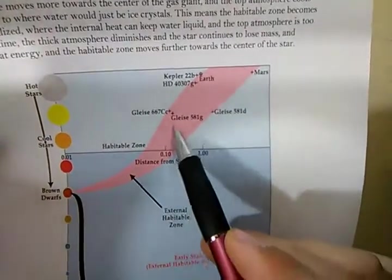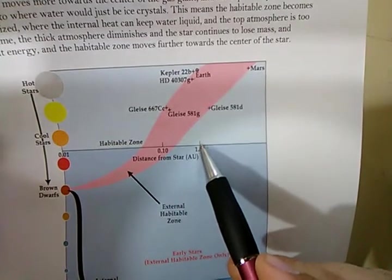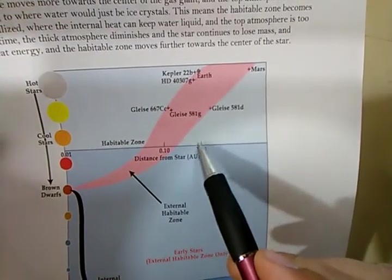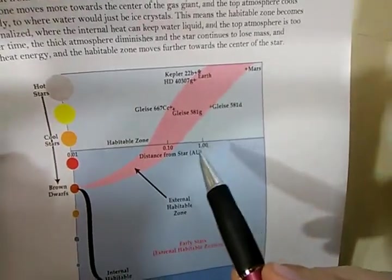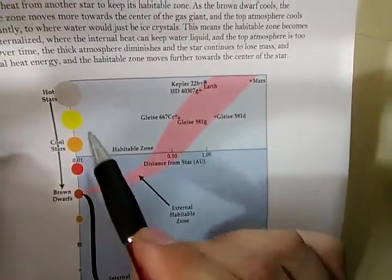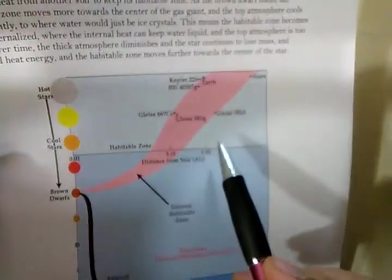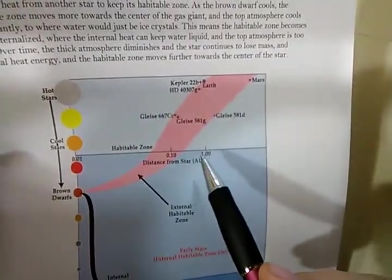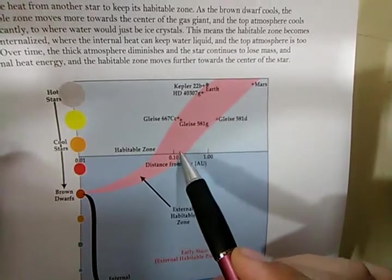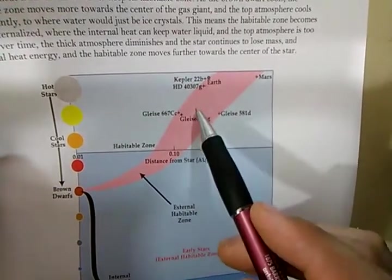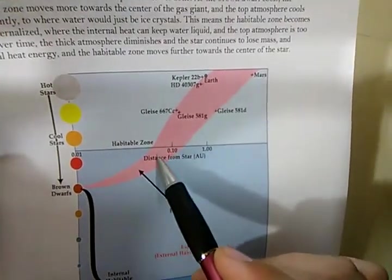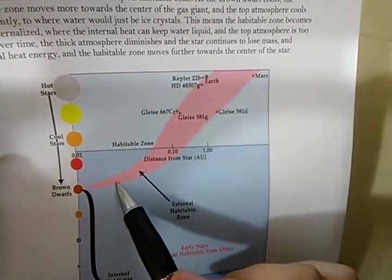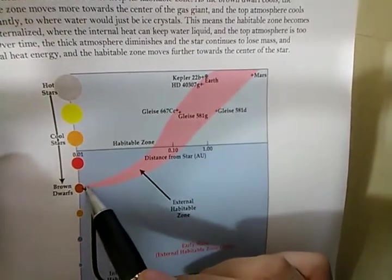And then once it becomes a red dwarf, the Earth is going to be too far away, so it's going to become a cold world eventually. So that's complete opposite of what establishment says. It says the sun is going to expand greatly into a red giant and go off the map. But what this means is that as the sun cools and shrinks and loses mass and dims, the habitable zone moves closer towards the star itself.